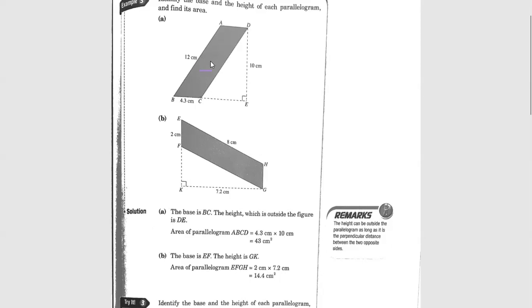You already told us how to solve the problem. Very good. We have parallelogram ABCD and we want to figure out the area. First, we need to find the perpendicular height — we extend this part from C to E because we want to draw a perpendicular height there.